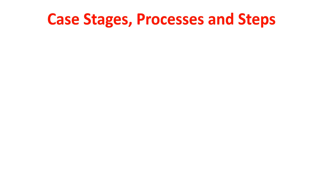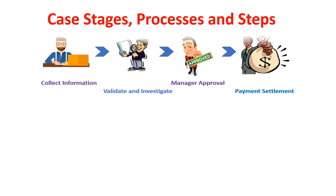If you take the Claims Request Processing, the case can be divided into four stages. In the first stage we collect information; in the second stage we validate and send the case to the investigation department. In the third stage it goes to manager approval, and when approved it goes to the fourth stage for payment settlement. We will define all four stages in Pega's case designer and look at the configurations available per each stage.